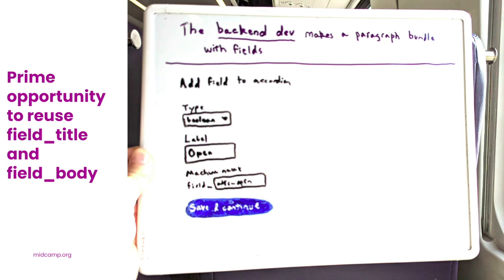Now, all the Drupal people — we're getting somewhere. In parallel with those designs, the back-end developer does the site-building portion of the build-out. For the sake of this example, the components are built using paragraphs, with accordion being a bundle with fields specified in the refined story. Other alternatives are block entity types, custom block classes, Layout Builder, or other entities and config schema that might map the necessary data.